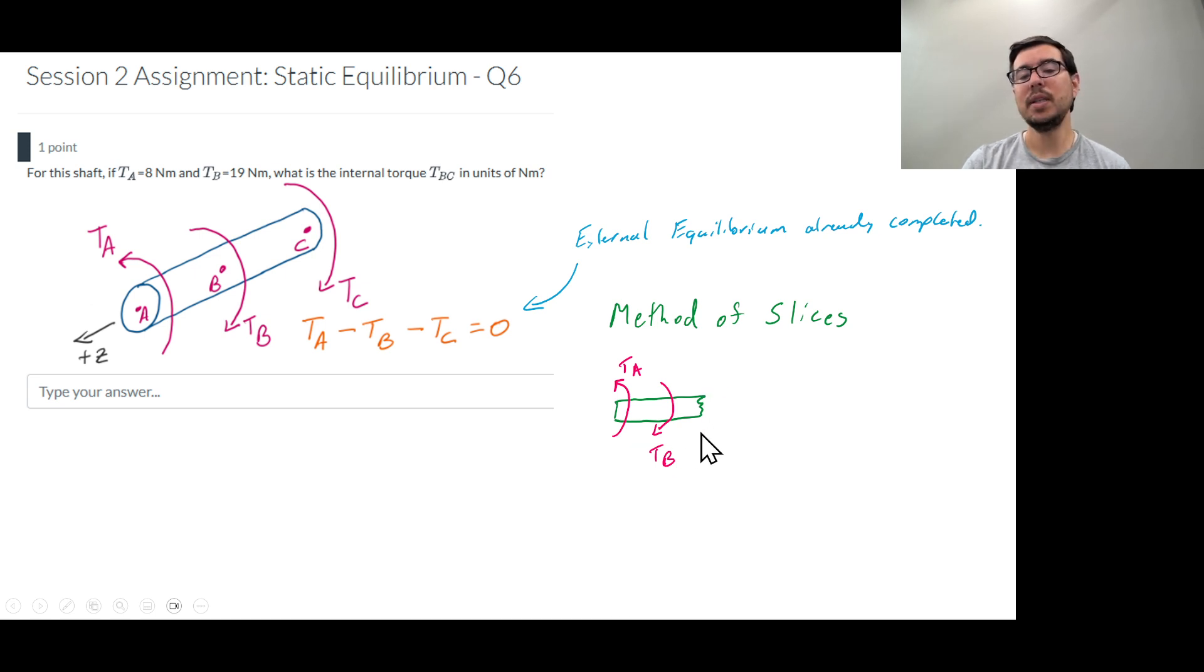Now when you have this slice here we ask ourselves the question what direction should I consider positive for a torque that I might have internally. The general rule or the convention I like to suggest that we follow is that we say it's positive coming out of this face. So we can draw a plus Z. Notice this plus Z is in the opposite direction of the plus Z used for the external equilibrium calculations. That is fine.